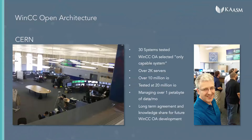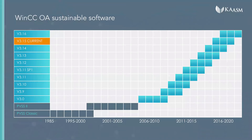One of the most storied systems we've ever come across is CERN, the Large Hadron Collider. This is an important relationship for WinCC OA, as we get a lot of joint development from CERN. Over the years it took 12 man-years to identify 30 different systems; a few were selected and tested, and at the end of the day WinCC OA was selected as the only capable system to manage their 10 million I/O, which tested at 20 million I/O. WinCC OA is actively managing roughly a petabyte of data per month, with long-term agreements in place for future knowledge share. The software has been around since 1985 and has a viable roadmap well into next decade.